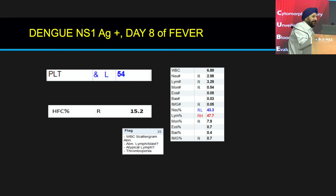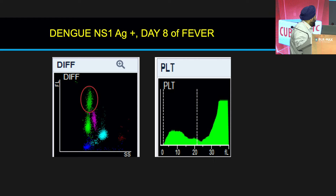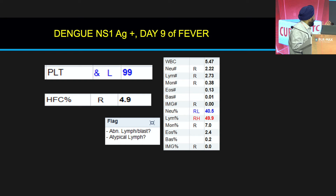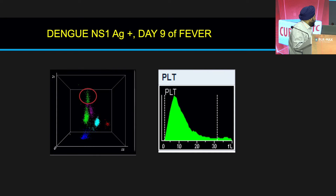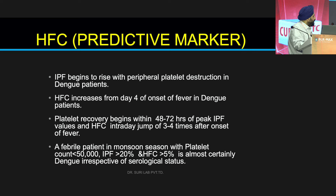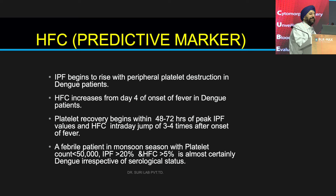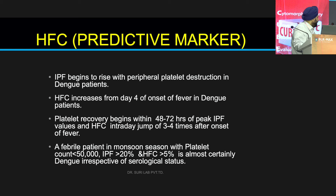The time HFC goes down is roughly the same time the platelet moves up. The important signal is the jump itself. On day 9, platelet further went up and HFC reduced to 4.9%. HFC increases from day 4 of onset of fever in dengue patients, and platelet recovery happens within 48 to 72 hours from an HFC jump of 3 to 4 times — just as it happens within 48 to 72 hours from peak IPF. So HFC is also a good prognostic marker of platelet recovery, just like IPF, and we found our own algorithm that works well in the post-monsoon dengue season in Delhi.